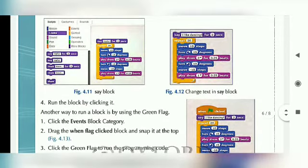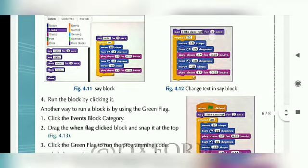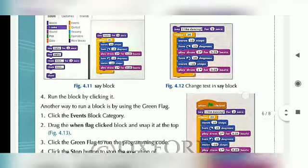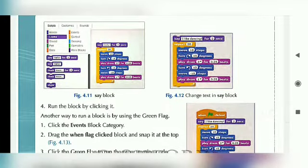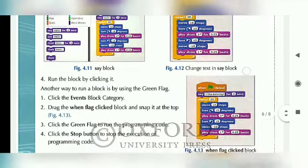Figure 4.12 shows how to change text in the Say block. हम लोगों ने यहाँ Say block में text को change किया है। पहले Say में 'Hello' था, हम लोगों ने वहाँ change करके 'I like dancing' लिखा — for 2 seconds। यह 2 seconds का sign है और हम लोगों ने 'Hello' से change करके 'I like dancing' किया है।